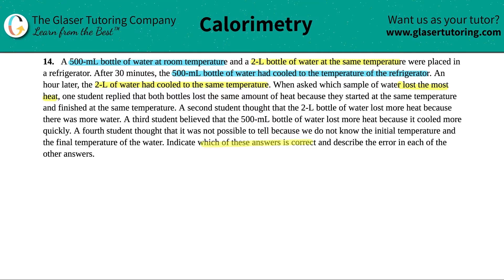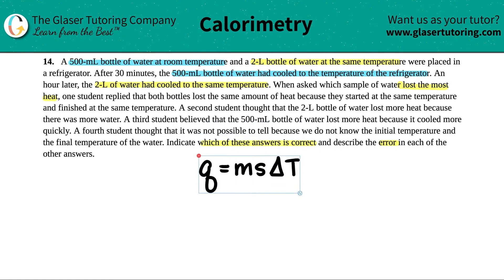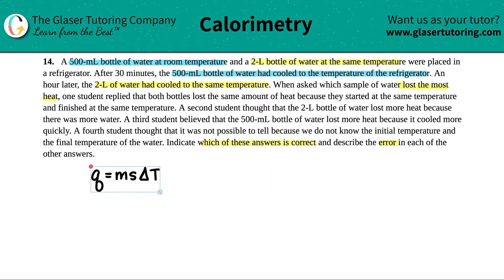Indicate which of these answers is correct and describe the error in each of the other answers. So this will be like a cool theoretical concept type of question. We're talking about heat loss and heat gained. They're telling us that we took two samples of water — a 500 milliliter bottle and a 2 liter bottle — and put them in the refrigerator and both of them lost heat. When we're talking about heat transfer, heat gain and heat lost, we think of this formula: Q equals mS delta T.